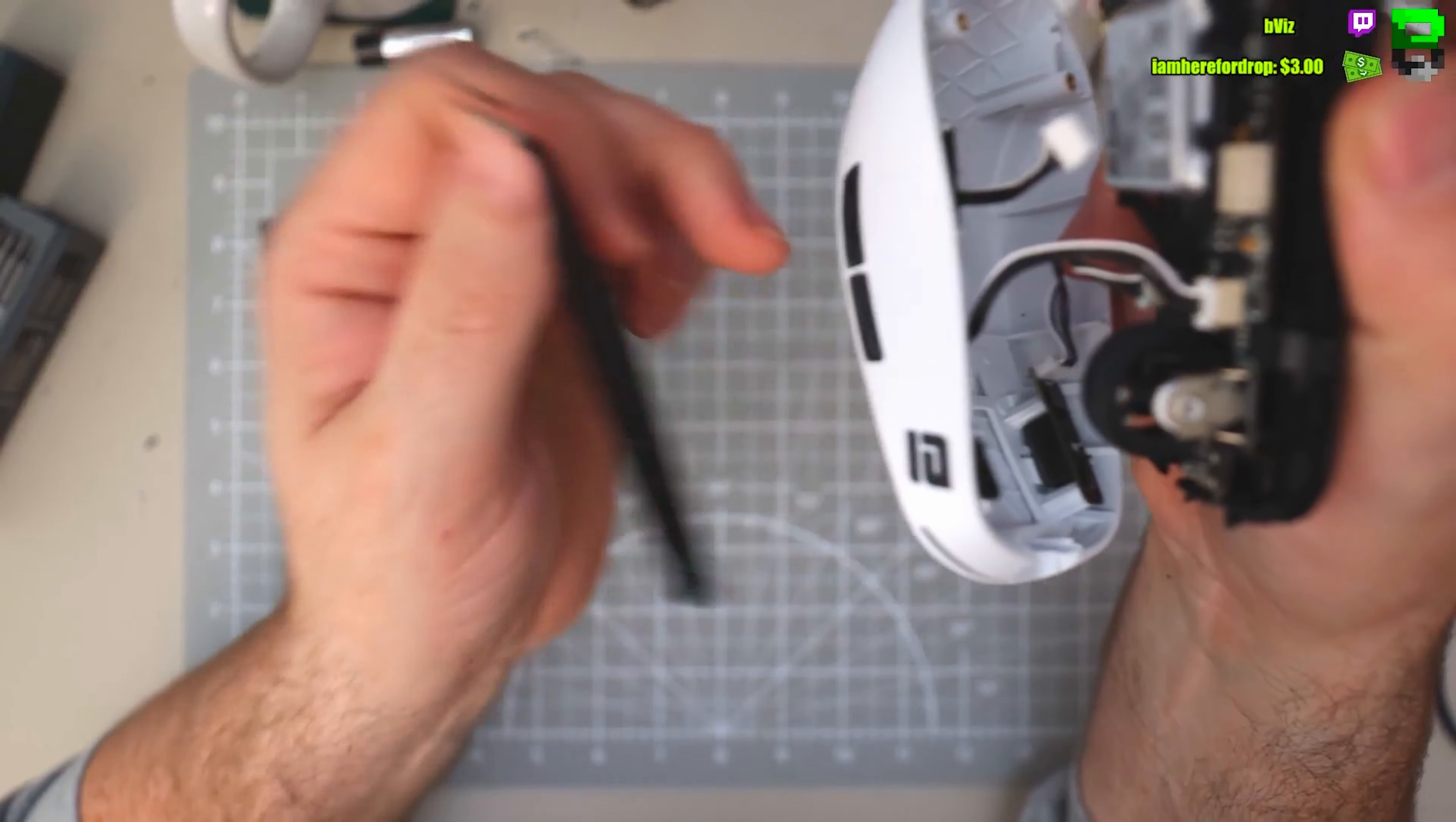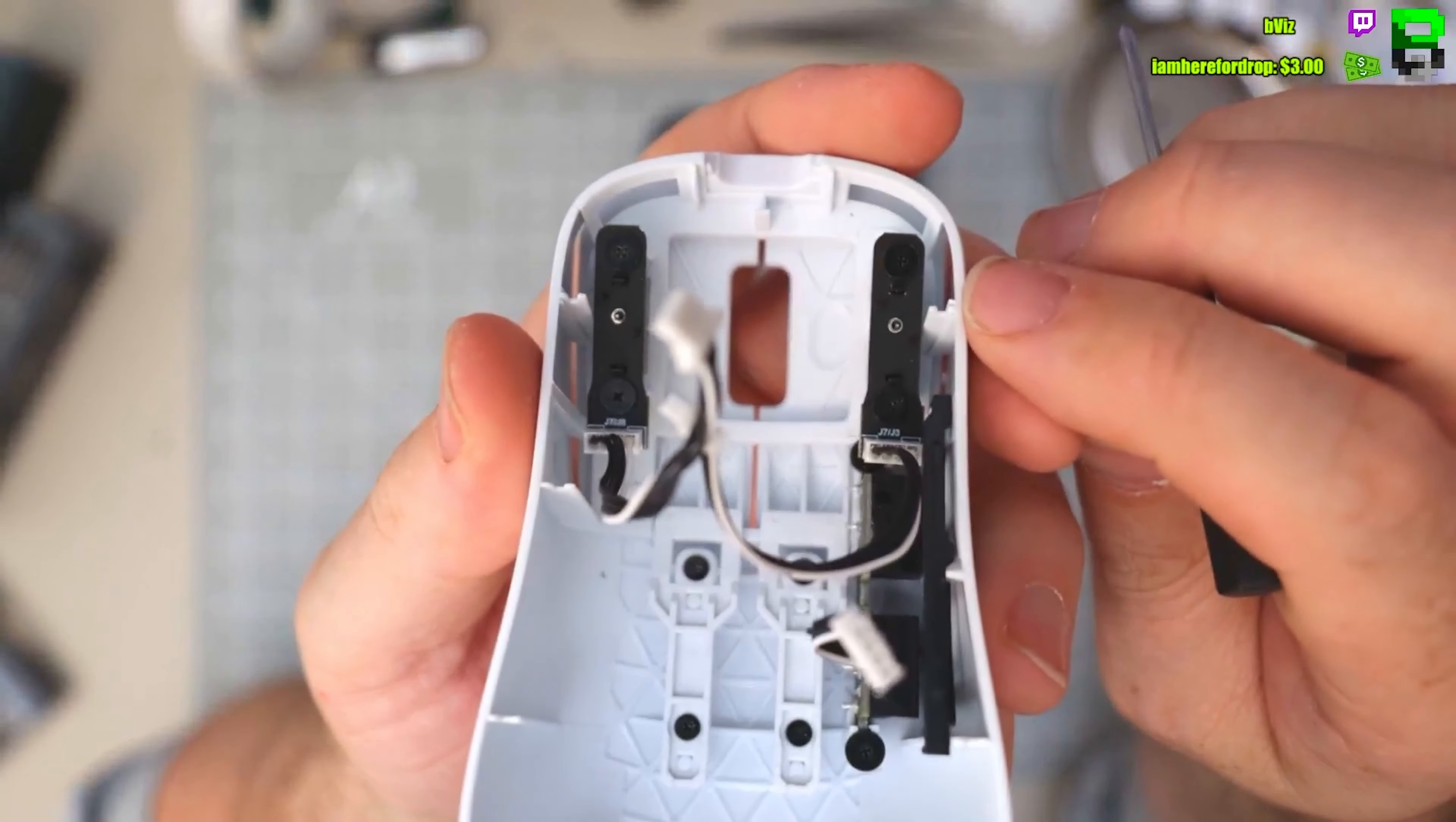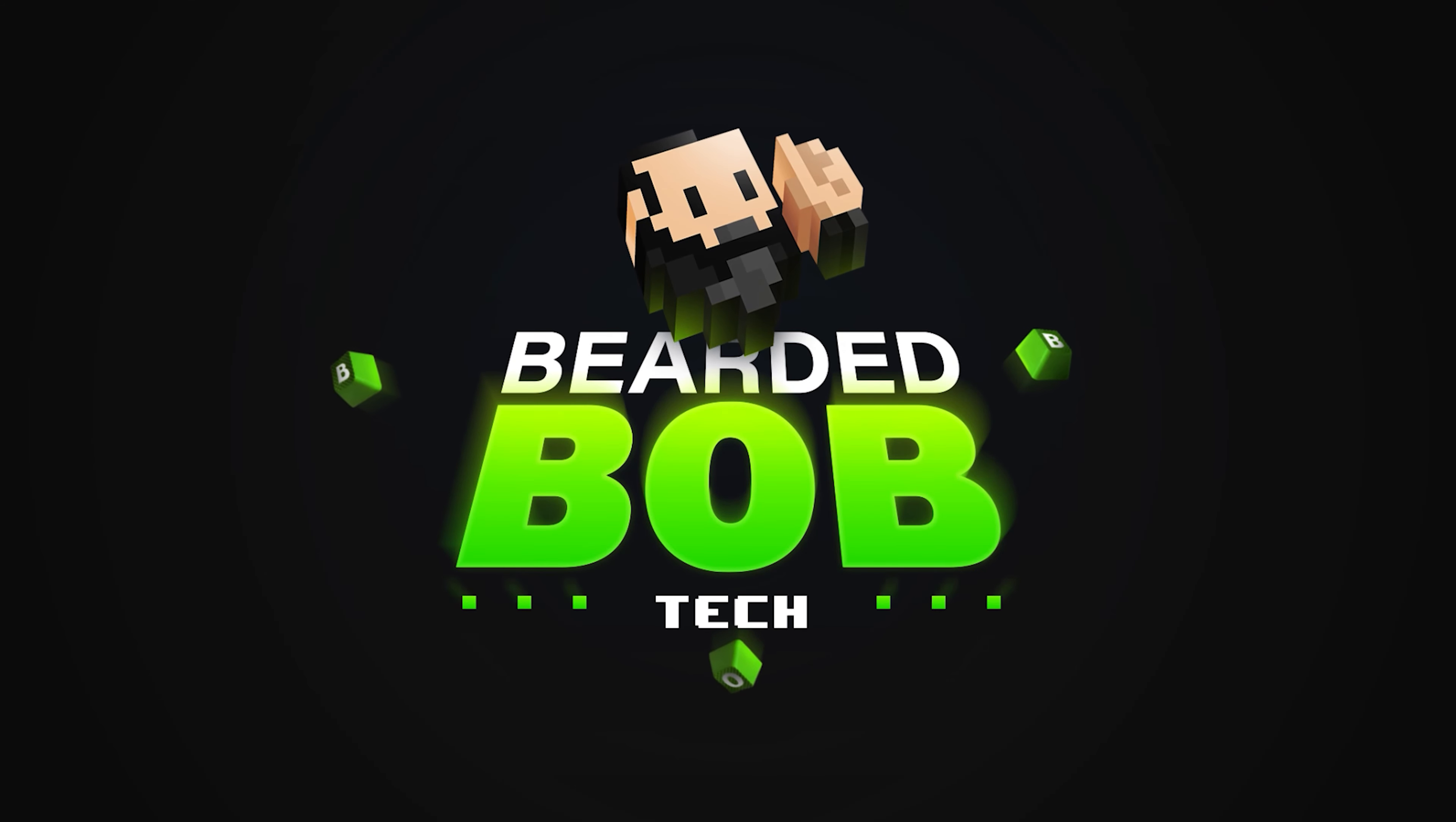So, if you're finding the OP1 WE from Endgame Gear mouse to have too hard a click, I'm going to show you today how you can solve that and get a much lighter click. It's a very easy mod to do. I'm Bearded Bob, been around gaming 35 years, I've got a lot of experience. I mod gaming mice and keyboards, I also do tech reviews, and I also enjoy playing things like Valorant and Tarkov.